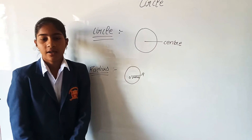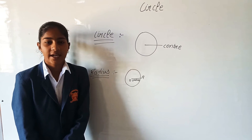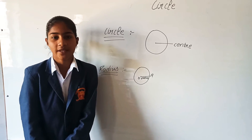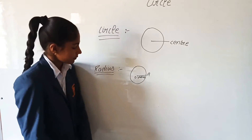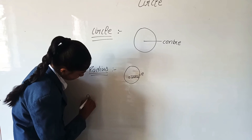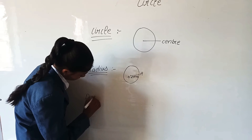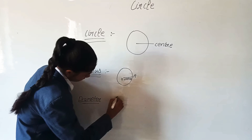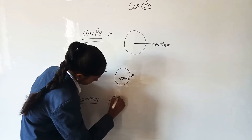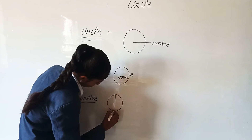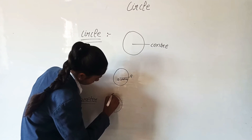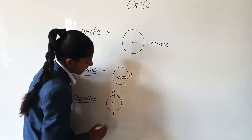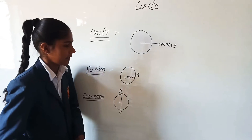Diameter. The diameter is double the radius. It intersects the circle at two different points and always passes through the center. Here, line A is known as the diameter and it divides the circle into two equal parts.